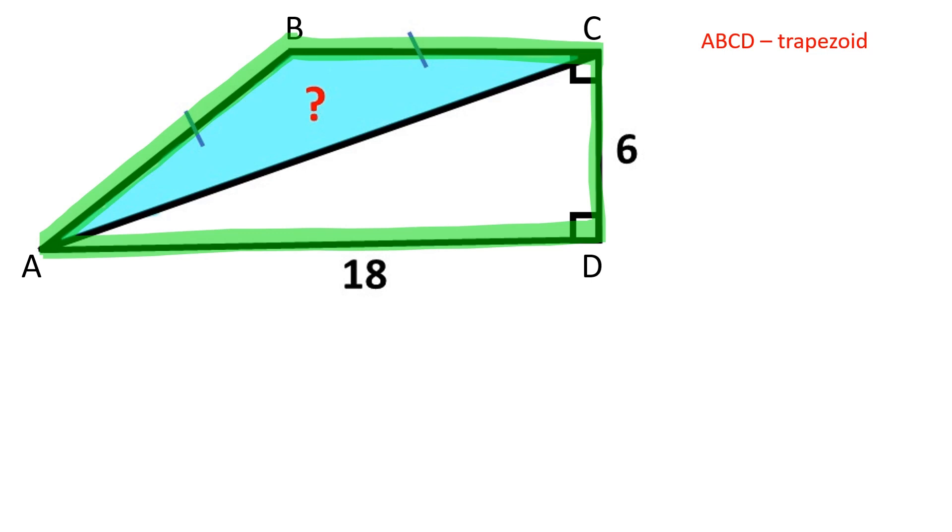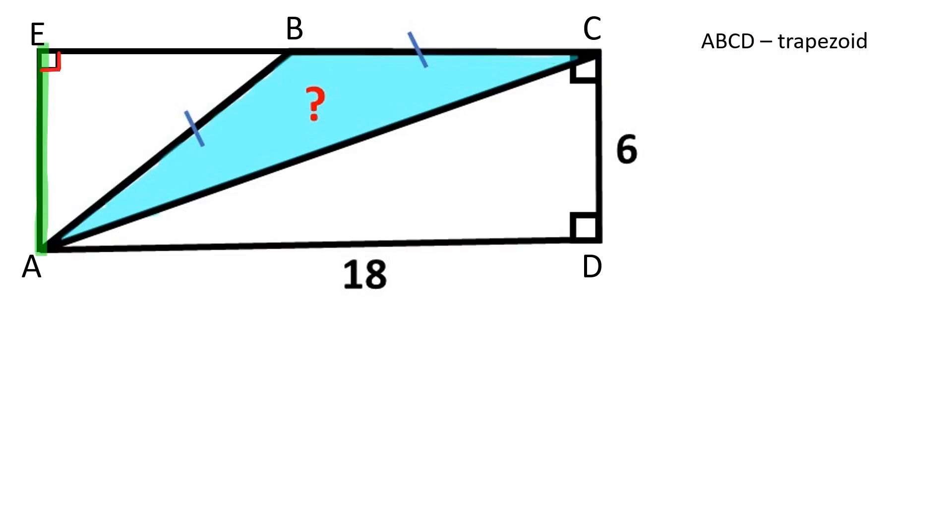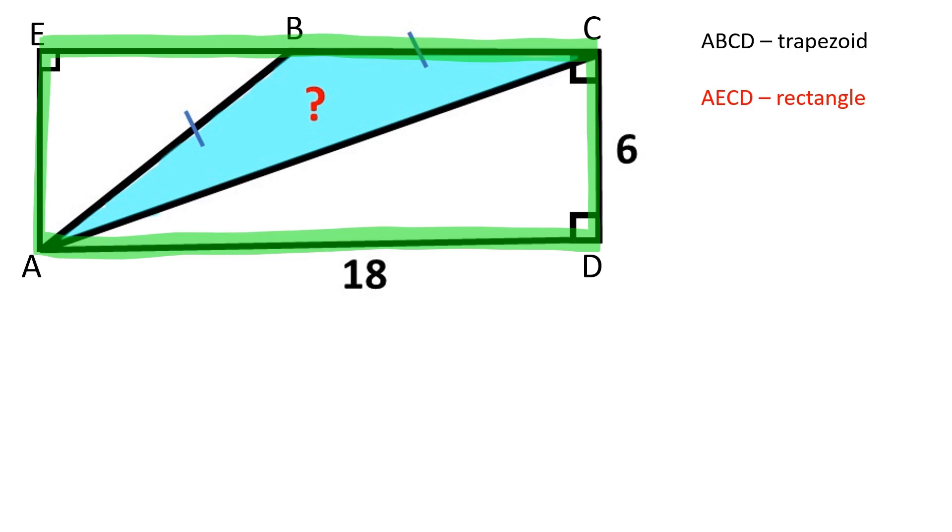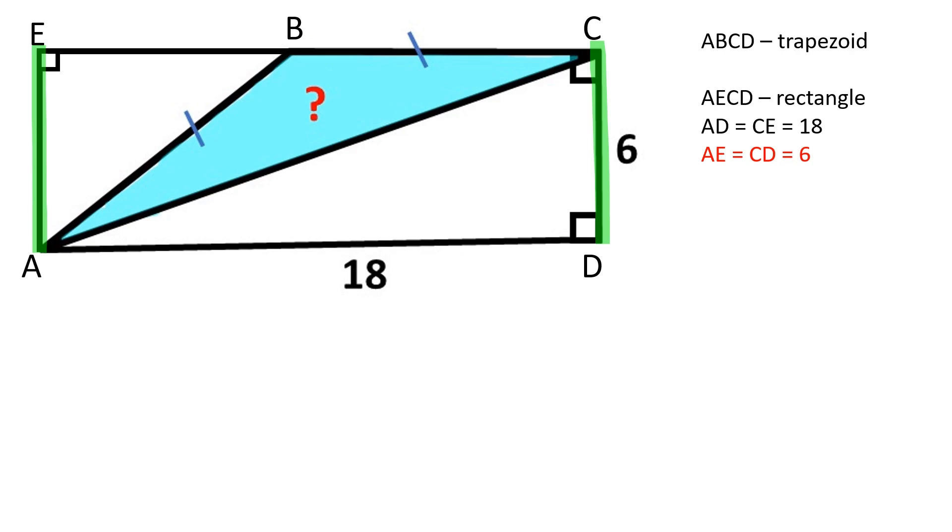ABCD is a trapezoid. Let's draw a line from point A perpendicular to BC extended at E. AECD is a rectangle. AD is equal to CE and equal to 18. AE is equal to CD and equals to 6.